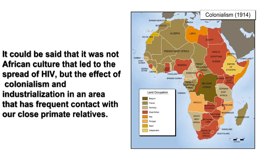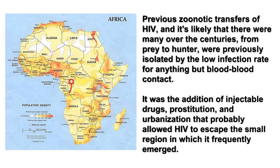It could be said that it was not African culture that led to the spread of HIV, but the effect of colonialism and industrialization, in an area that had frequent contact with our close primate relatives. Previous zoonotic transfers of HIV — and it's likely that there were many over the centuries, from prey to hunter — were previously isolated by the low infection rate from anything but blood-to-blood contact. It was the addition of injectable drugs, prostitution, and urbanization that probably allowed HIV to escape the small region in which it frequently emerged.